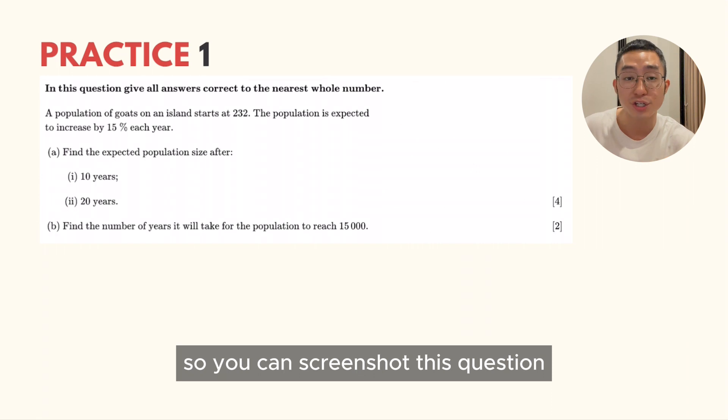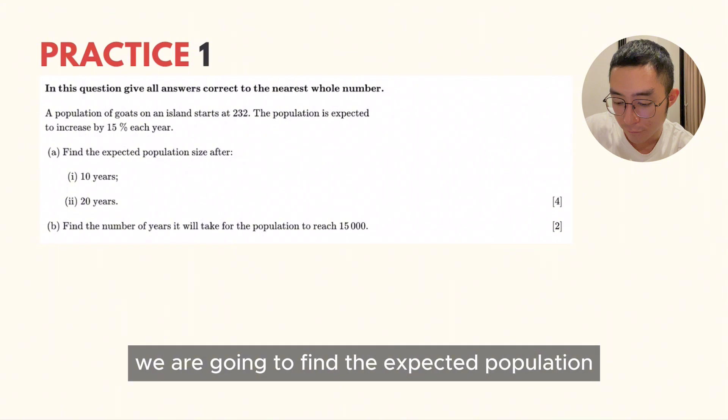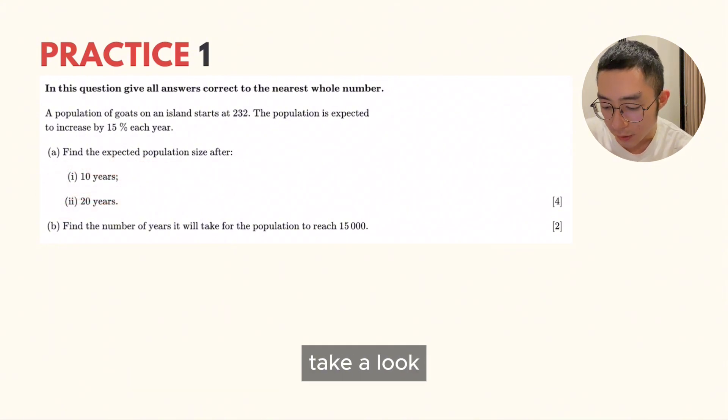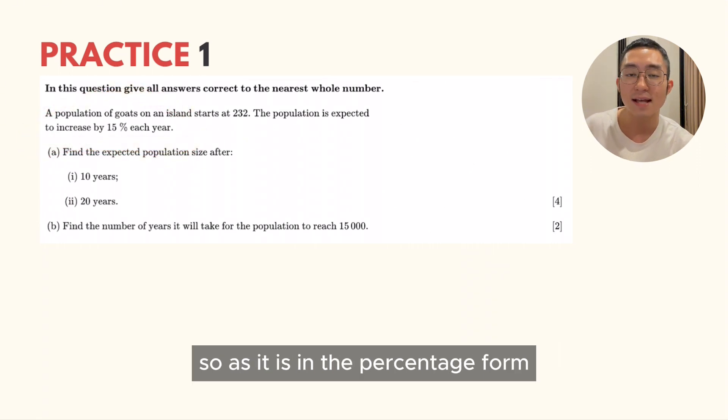This is the exam question style for exponential and logarithmic. You can screenshot this question and I'm going to solve it in 3, 2, 1. First things first, we are going to find the expected population after 10 years. Take a look that the population is increased 15% each year. As it is in percentage form, it depends on the previous term.